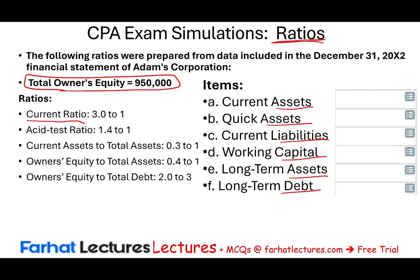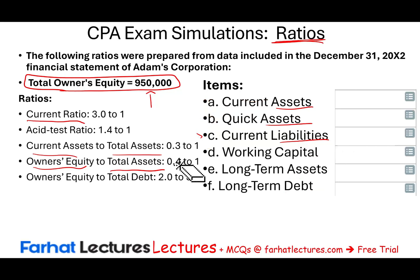So how do we start solving this puzzle? We are given owner's equity. The current ratio is current assets divided by current liabilities — we don't have those figures. The acid test ratio is quick assets divided by current liabilities — we don't have those either. But owner's equity to total assets equals 0.421. That means 950 divided by total assets equals 0.4, so we can call total assets 'A' and solve: 0.4A = 950.